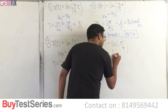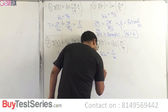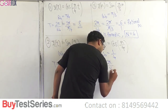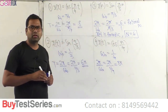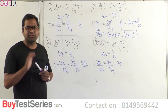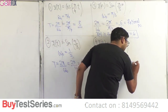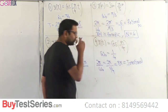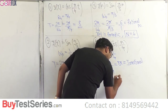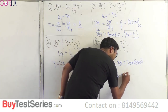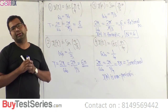For the discrete time signal x(n) = cos(n/4), ω₀ = 1/4. We calculate 2π/ω₀ = 2π/(1/4) = 8π. Since π is an irrational number, 8π is irrational. Therefore x(n) is non-periodic, and since it is non-periodic, there is no question of a period.